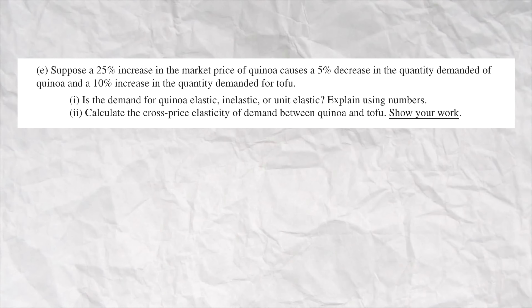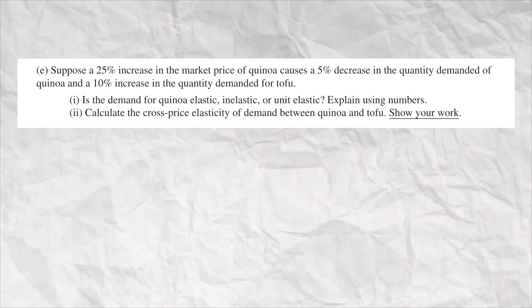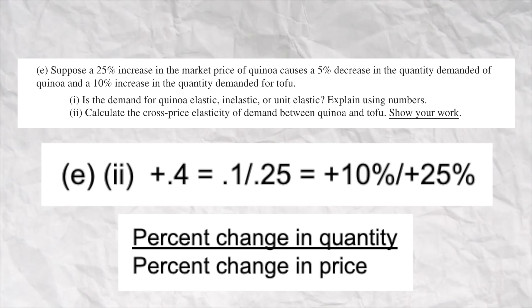In part E, it switches over and starts asking questions about elasticity. In E1, the right answer is inelastic, but they wanted you to explain and use numbers. So if you give the elasticity of demand coefficient, or at least set up the equation, you probably get it — especially if you point out that that number is less than the absolute value of one. For E2, they ask you to calculate the cross price elasticity and show your work. The right answer is 10% over 25%, so 0.4. In the past they'd give you the point if you set up the equation properly — you had to show 10% over 25%, or 0.1 over 0.25.